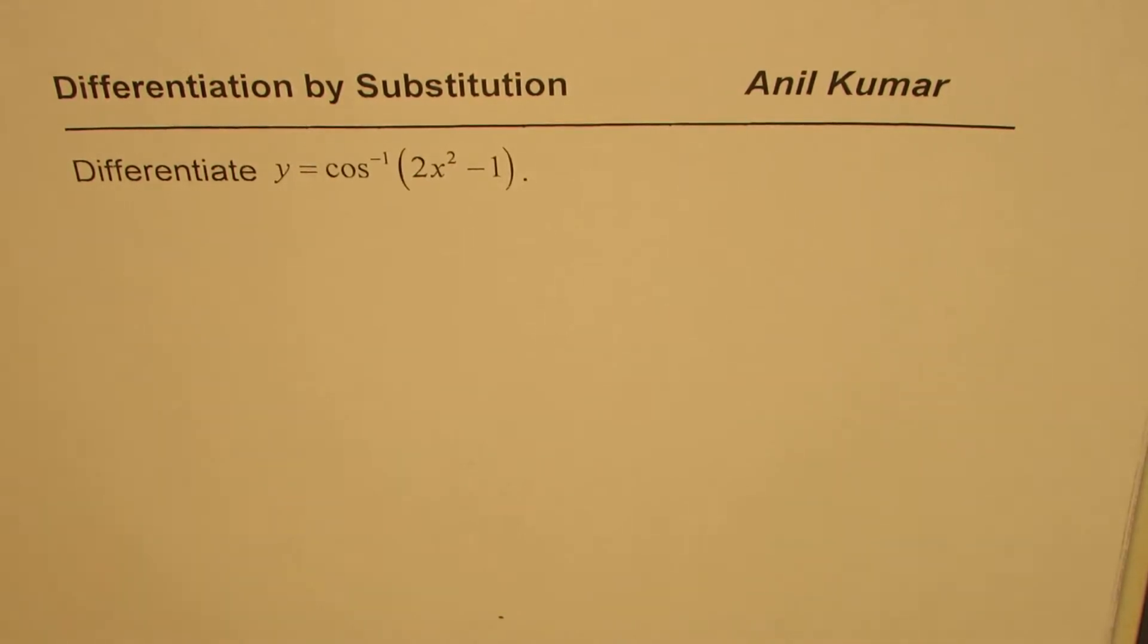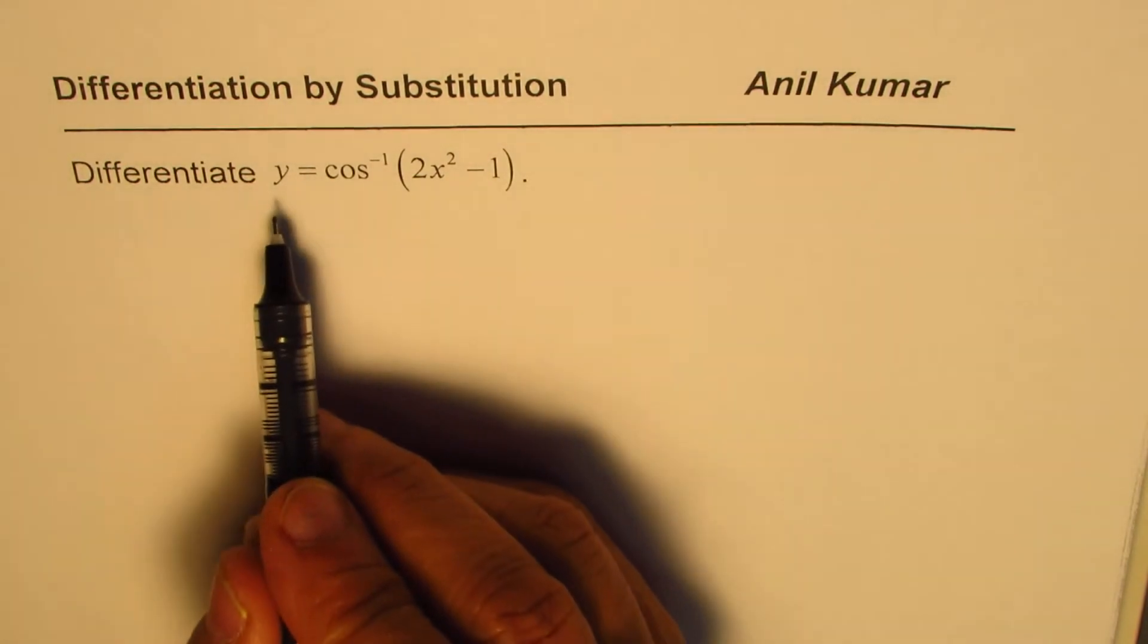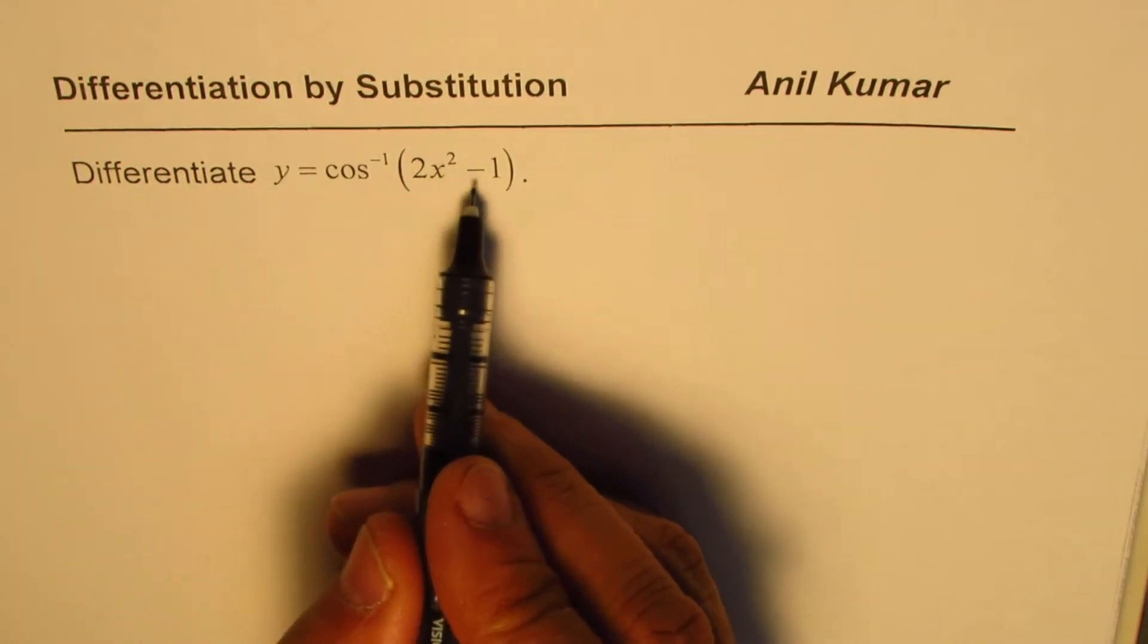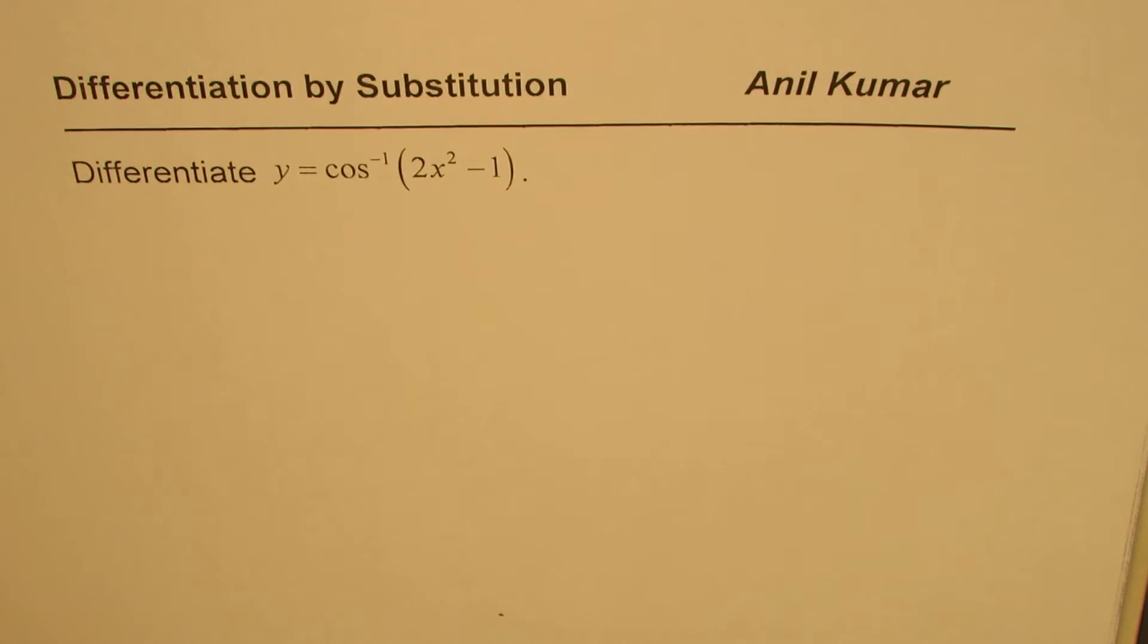So here is an example. We need to differentiate y equals cos inverse of 2x squared minus 1. So let us review a few trigonometric identities which we have learned.